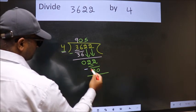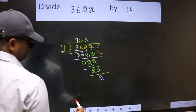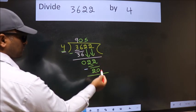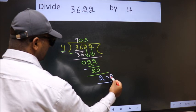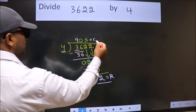Now we subtract and get 2. No more numbers to bring down, so we stop here. This is our remainder and this is our quotient.